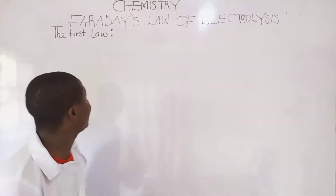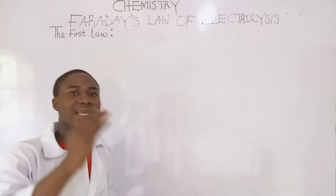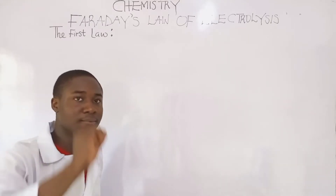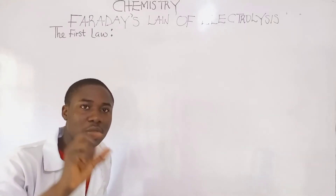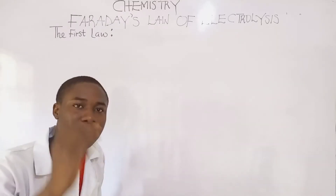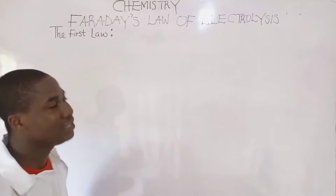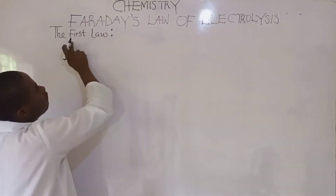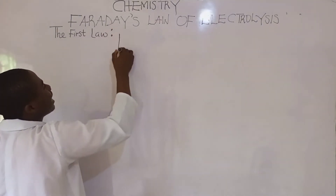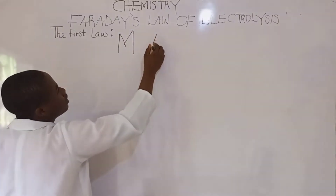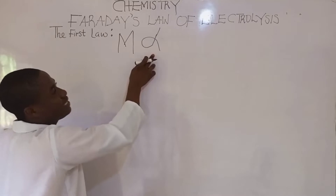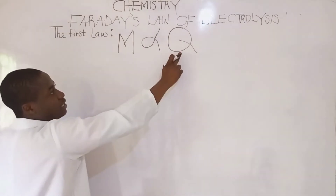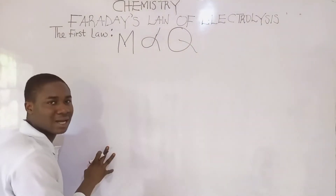The first law under Faraday's law of electrolysis states that the mass of a substance deposited during electrolysis is directly proportional to the quantity of electricity that passes through the electrolyte. This is the quantity of electricity, and this is the mass of the substance.